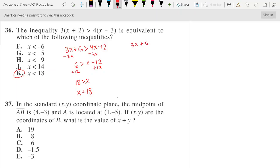3x plus 6 is greater than 4x minus 12. Let's say you had subtracted 4x to the other side. That gives us negative x plus 6 is greater than negative 12. Then we would get negative x is greater than negative 18.